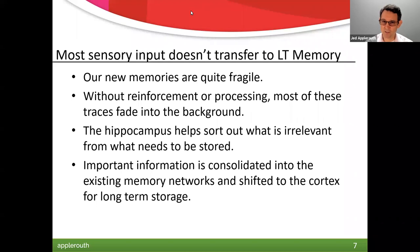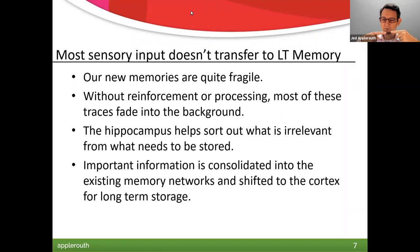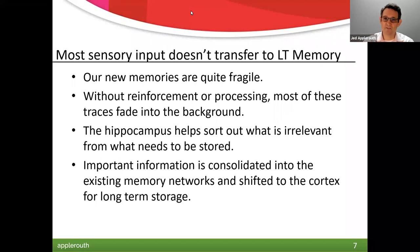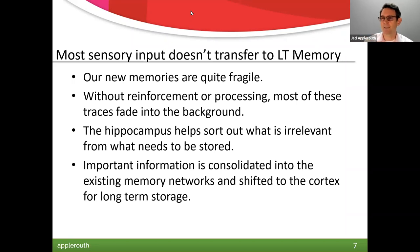Most input doesn't transfer — most new memories are ephemeral and very fragile without reinforcement. These neurons wire together for a moment, but if you don't reinforce it, they go somewhere else to wire. The hippocampus is trying to figure out what's relevant versus irrelevant, and what to consolidate into long-term memory networks and shift to the cortex for long-term storage.